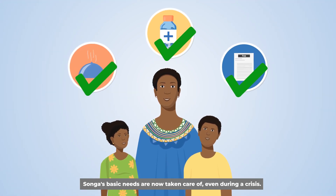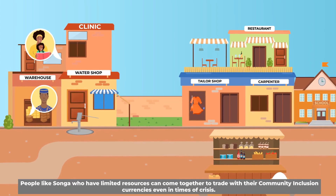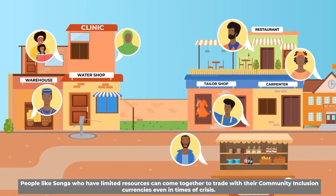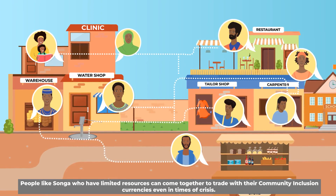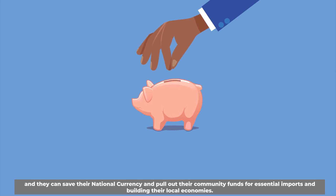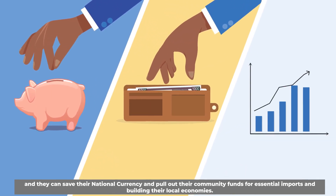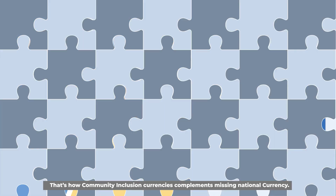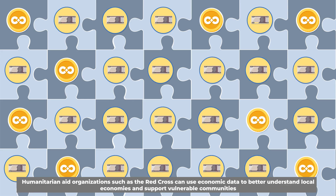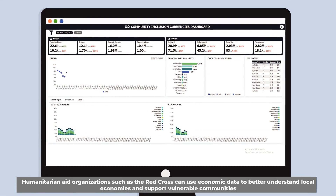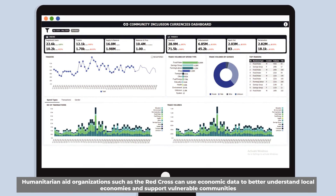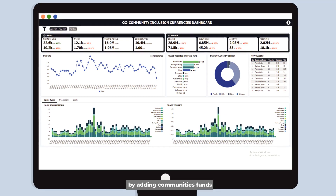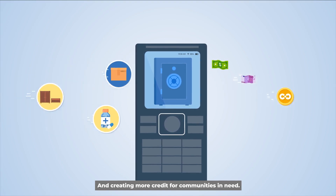With CICs flowing through the community, trade increases and the market stabilizes. Songa's basic needs are now taken care of even during a crisis. People like Songa, who have limited resources, can come together to trade with their Community Inclusion Currencies even in times of crisis. They can save their national currency and pool out their community funds for essential imports and building their local economies. That's how Community Inclusion Currencies complement missing national currency. Humanitarian aid organizations, such as the Red Cross, can use economic data to better understand local economies and support vulnerable communities by adding community funds and creating more credit for communities in need.